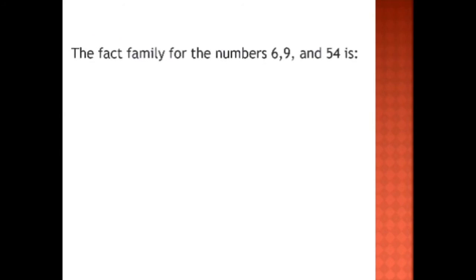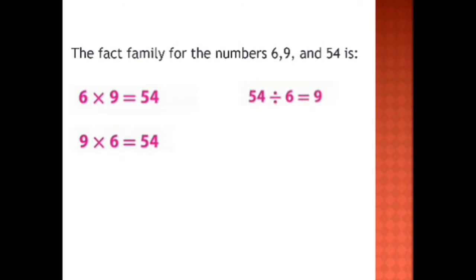So let's have another example for the fact family — the fact family for the numbers 6, 9, and 54. From the times table we learned before, we know that 6 times 9 equals 54. This means 6 times 9 equals 54, and also 9 times 6 equals 54. For the division, we divide the bigger number: 54 divided by 6 equals 9, and 54 divided by 9 equals 6.